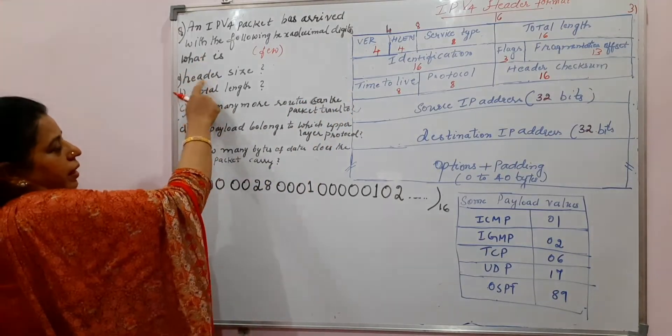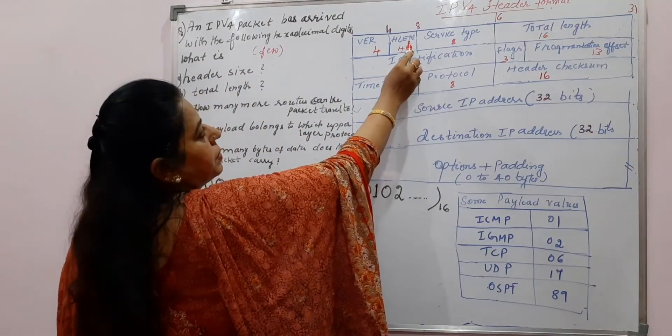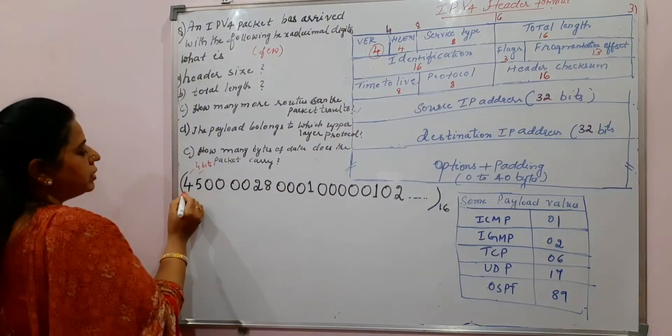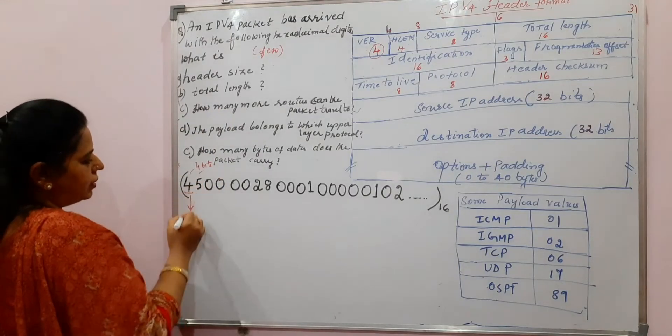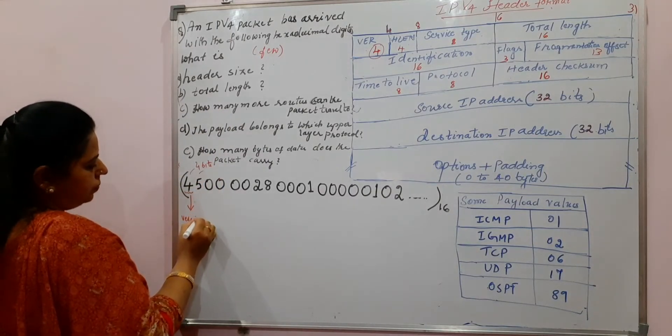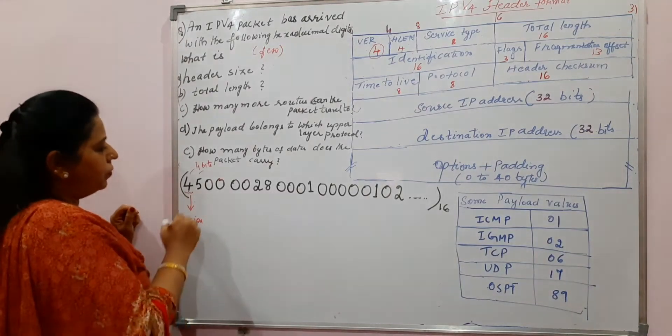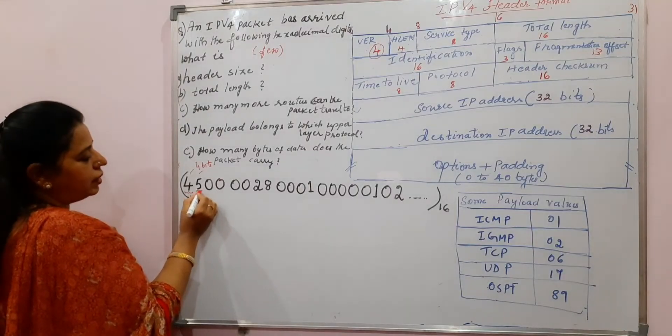Let us start from the first one, header size. Header size where exactly is present? It is present in the second field. The first field is the version field. So version field is what here? 4. Even if it is not asked, we can tell that yes, this is version 4. The packet belongs to version 4, IP version 4. The next is header length. Header length value given here is how much? 5.